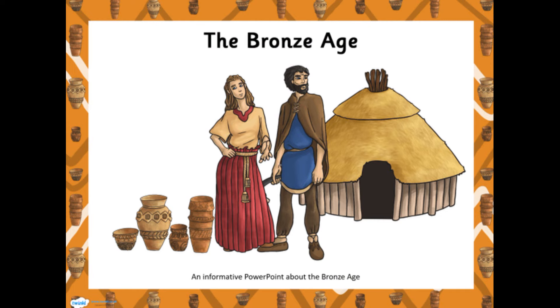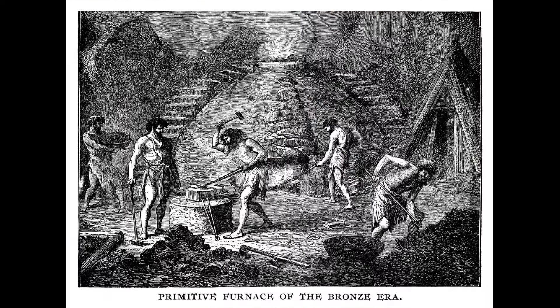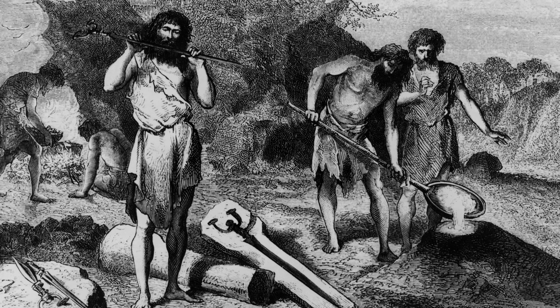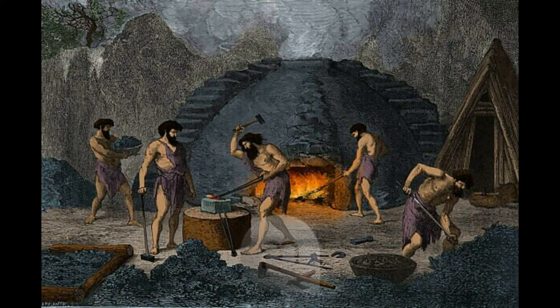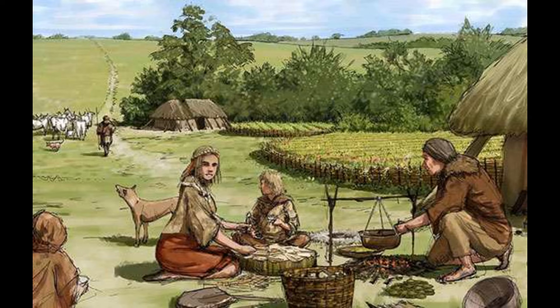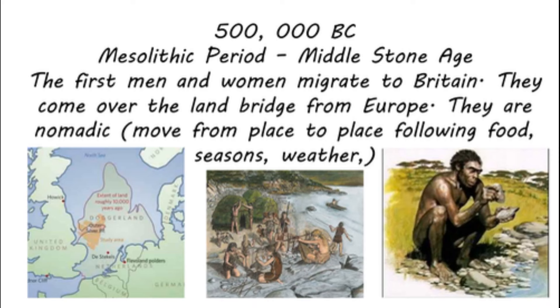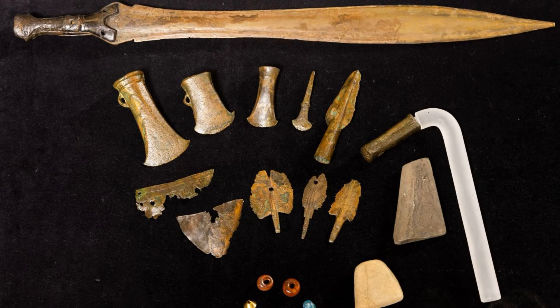Bronze Age and Iron Age. In the early history of Europe, there were important periods such as the Bronze Age and the Iron Age. Bronze was an important material for the early civilizations of Europe, and bronze items were produced. With the arrival of the Iron Age, iron replaced bronze, and more advanced weapons and tools were produced in Europe.